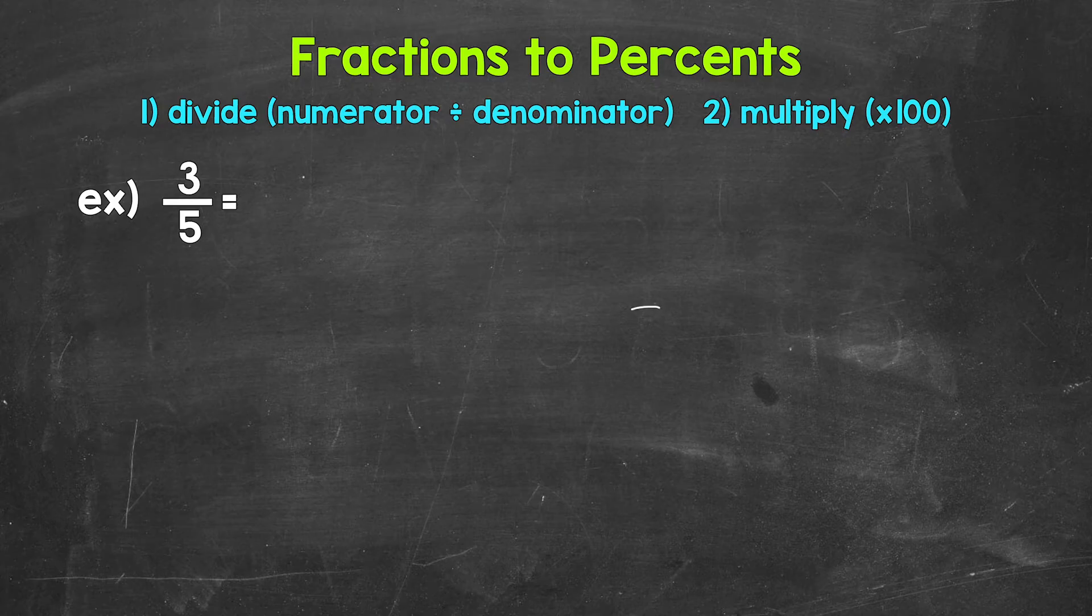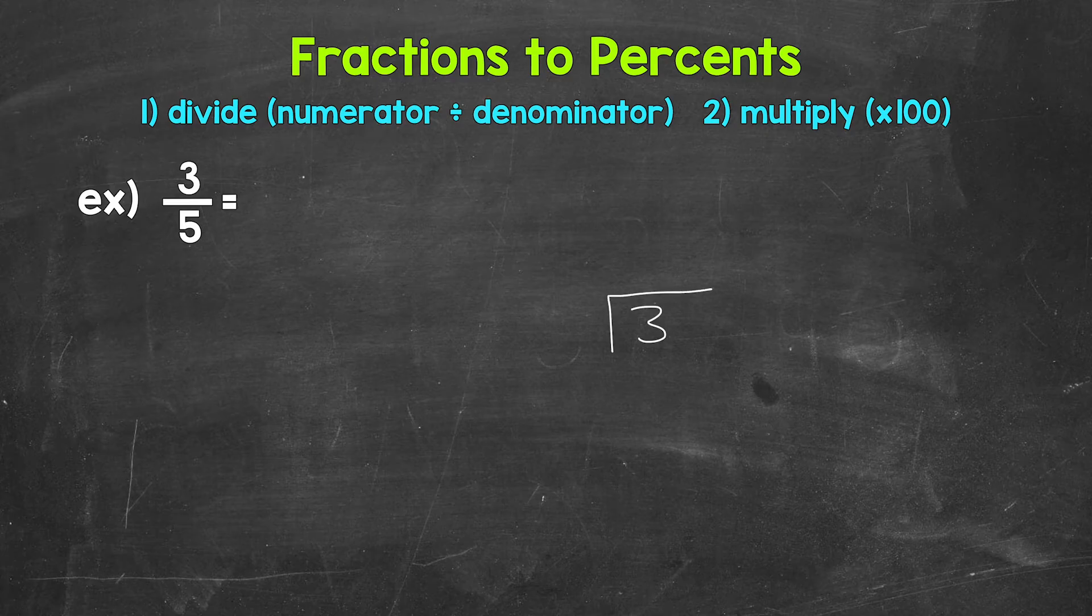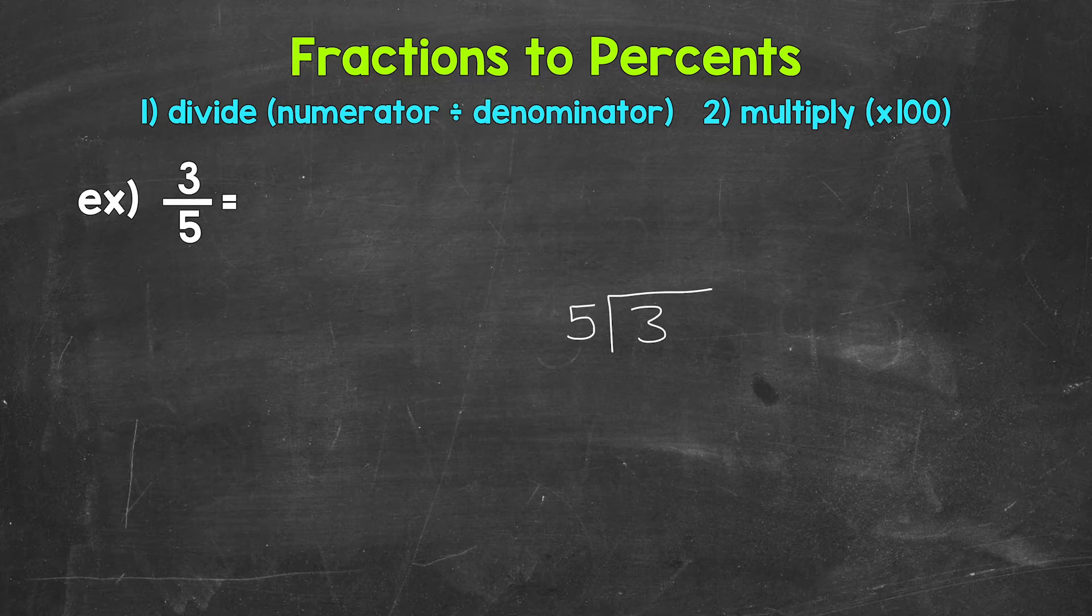So for 3 fifths, we can set this up as 3 divided by 5. And now we can work through the division process. So we have 3 divided by 5. How many whole groups of 5 in 3? How many 5s in 3? Well, we can't do that. So we need to use a decimal and a zero in order to work through this.